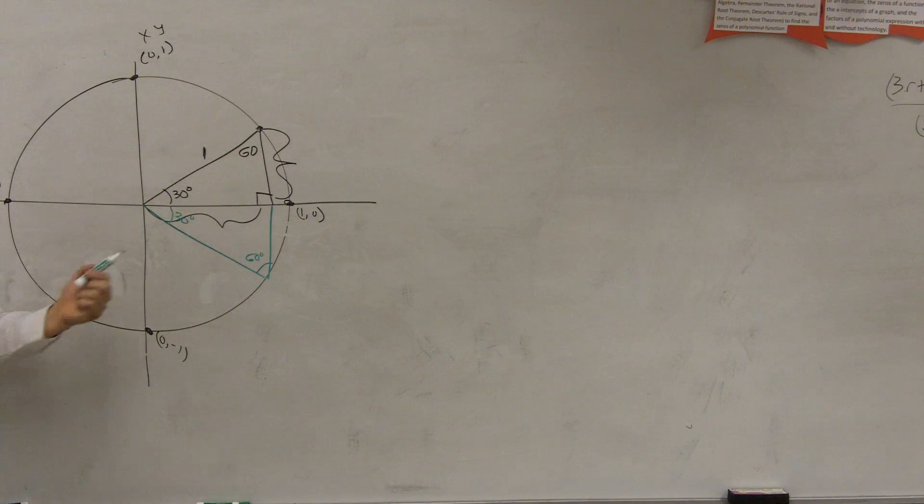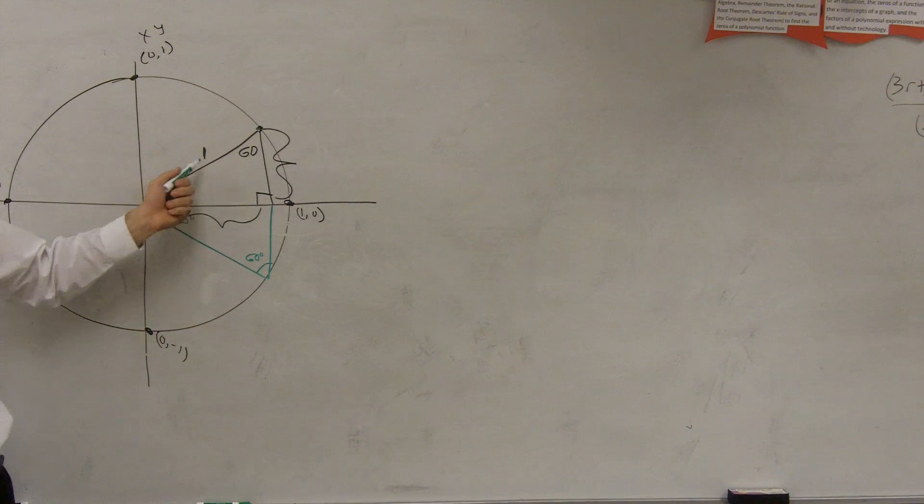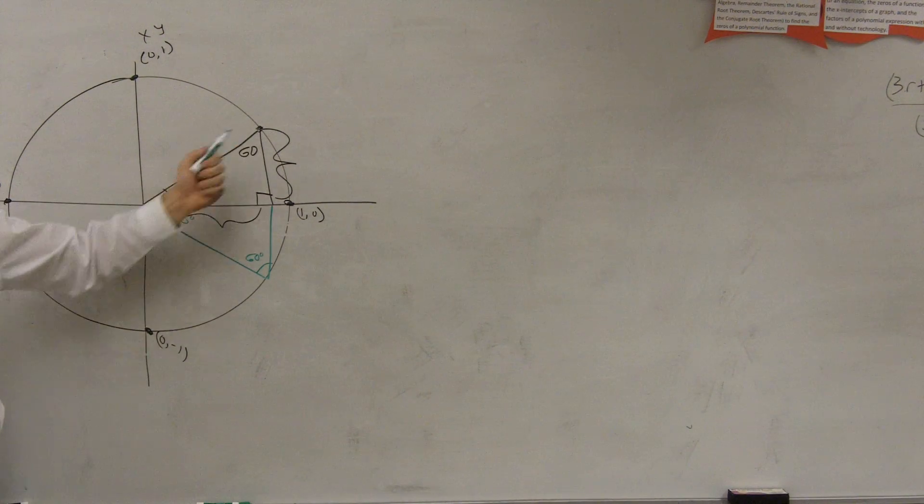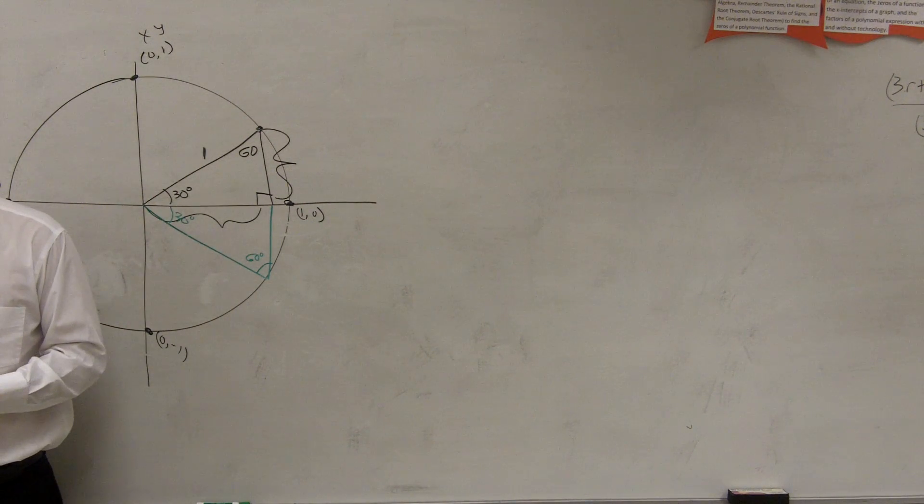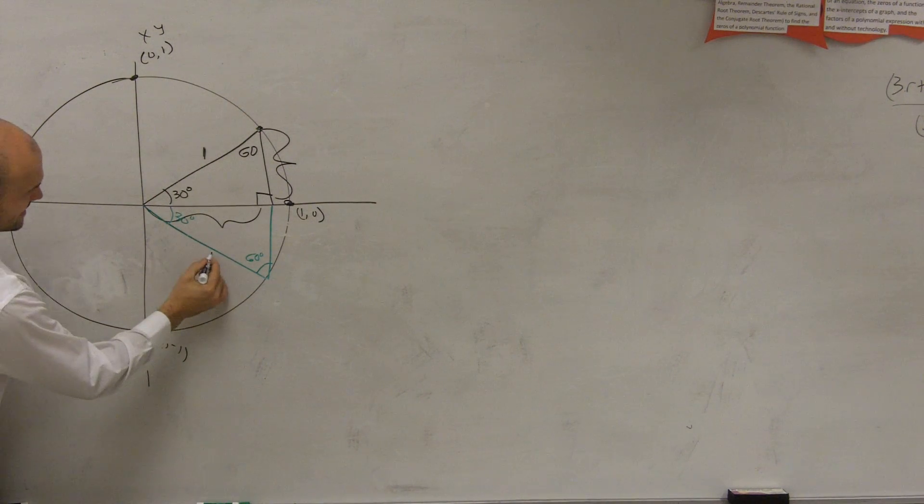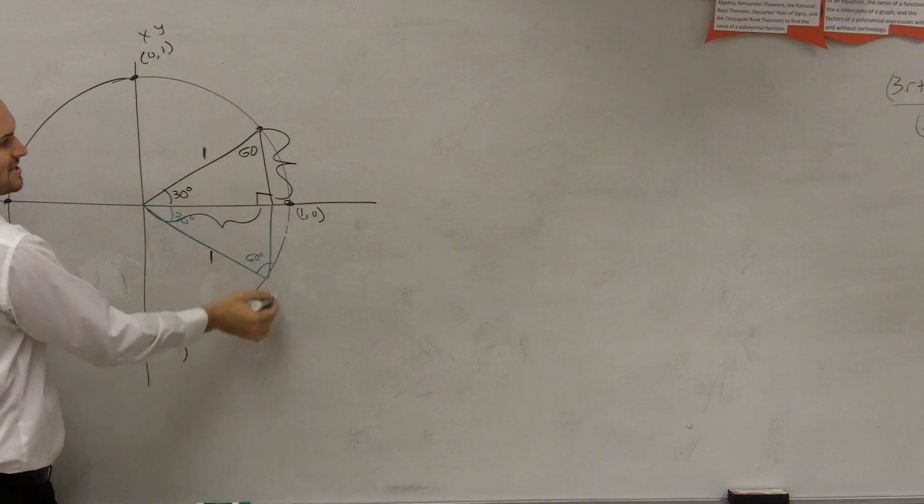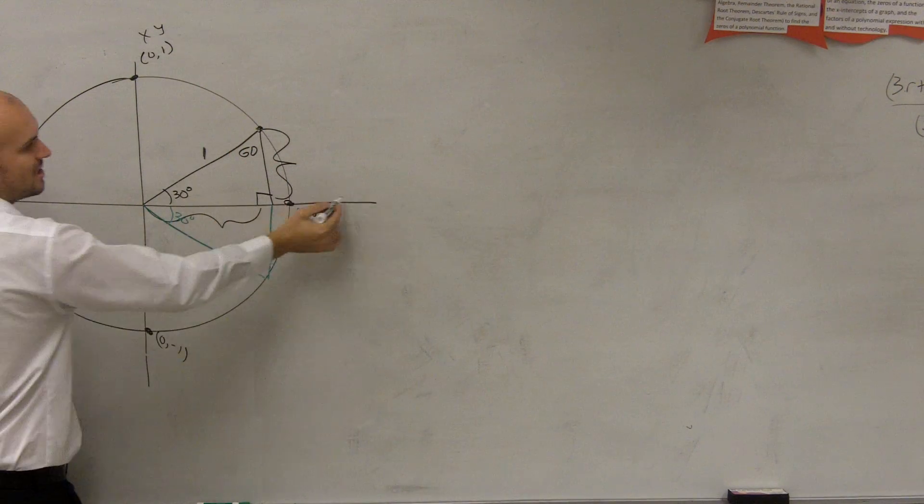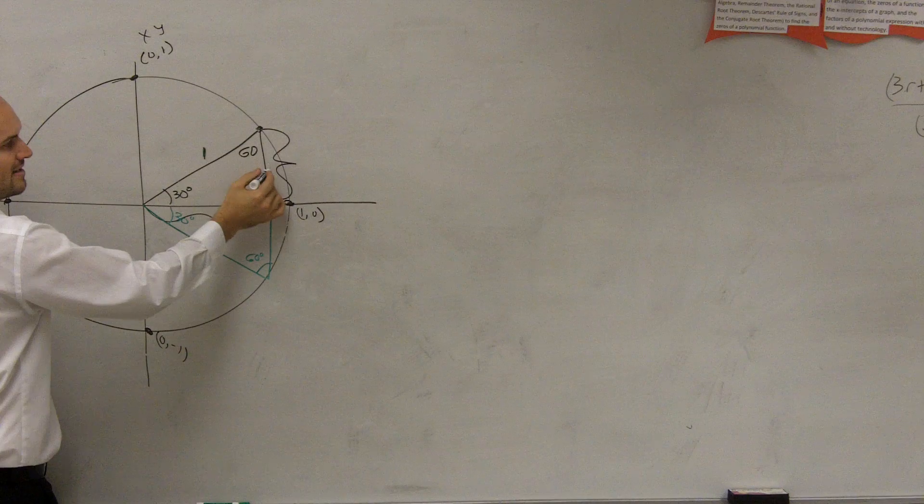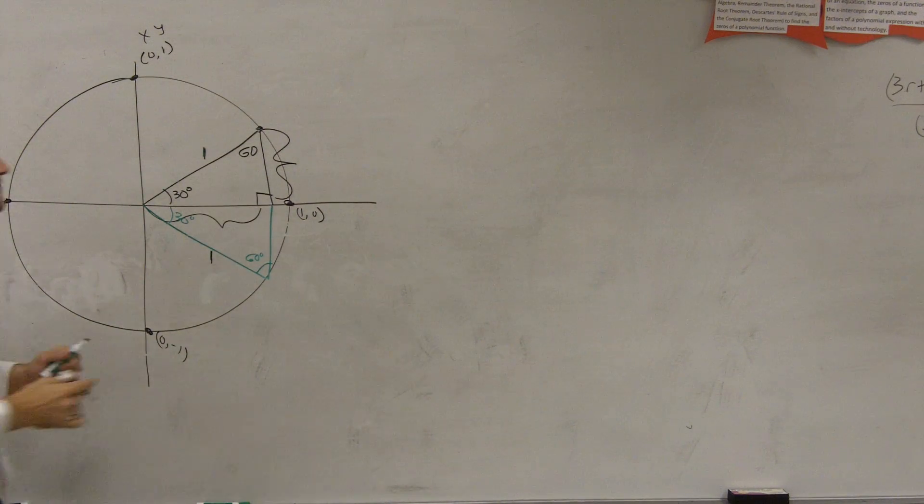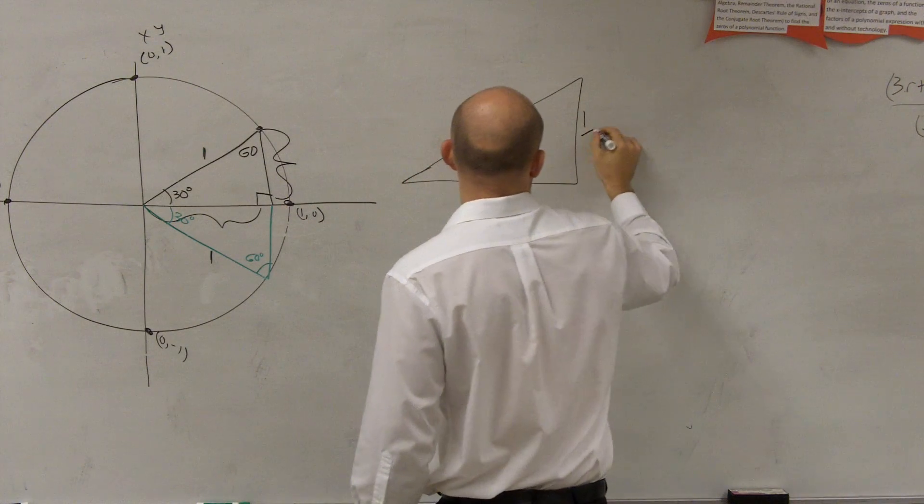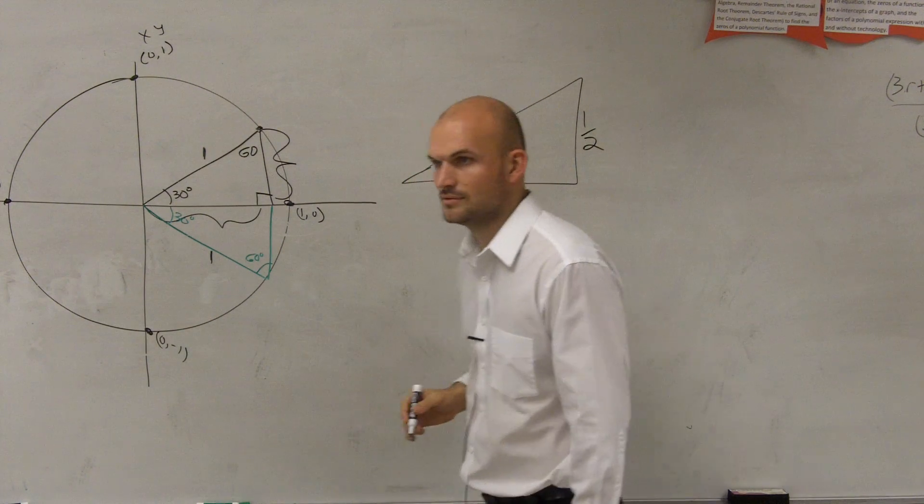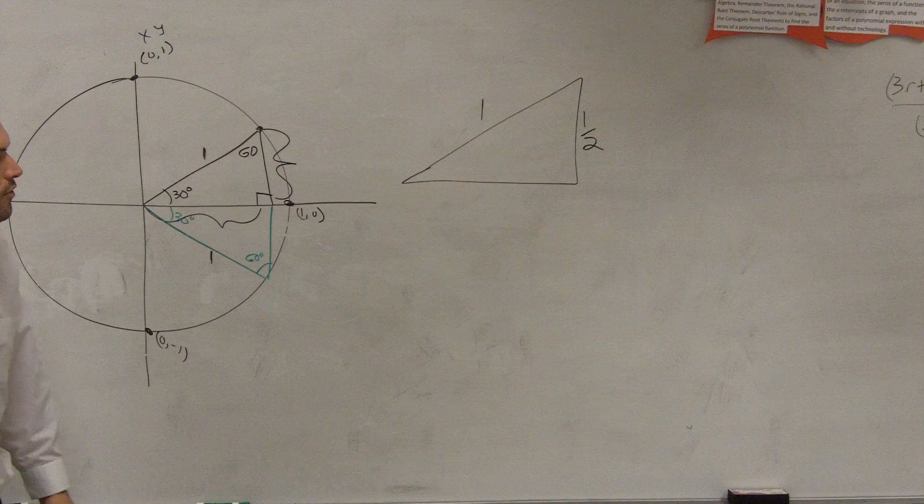So therefore, if this is 1, because remember, we're talking about our unit circle. So what's the radius always? What's always the radius? 1, right? So if that's 1, and if this is a 60, 60, 60, then it's an equilateral triangle. So you could say this is 1, then this whole distance would be 1, but if it's cut in half, if it's bisected, then this whole side is going to be what? 1 half, right? So right now, I have 1 and 1 half. The only length I do not know is this, right here.